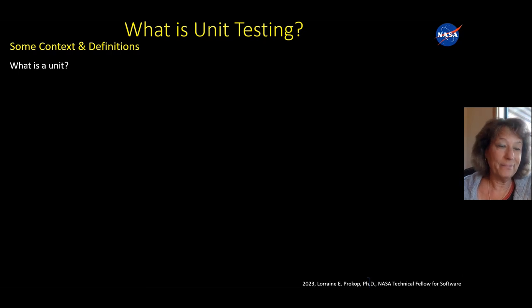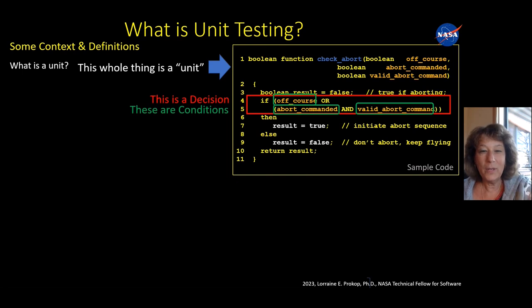So, what is unit testing? First, we got to start with what is a unit? So, this whole thing that I've shown is a unit. It's a function or a method. And some things to kind of point out. The thing I haven't read is a decision and the individual elements of that decision are conditions. They all evaluate to true or false. I'm going to be going through the paths through that when I talk about unit testing. So, it's good to know the terminology.